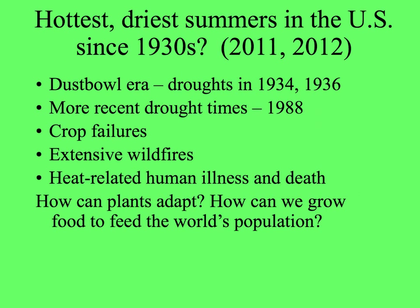We're at the end of summer in much of the United States — it still feels pretty summery here in Miami. This year has seen some extremes in temperature, and in 2011 and 2012 they were said to be the hottest, driest summers in our country since the 1930s. During the Dust Bowl era there were serious droughts, and in 1988 — maybe before some of you were born — many alive today can remember these drought times. What happens during those times is crops fail. Not only farmers suffer, but the people who depend on those crops for food suffer.